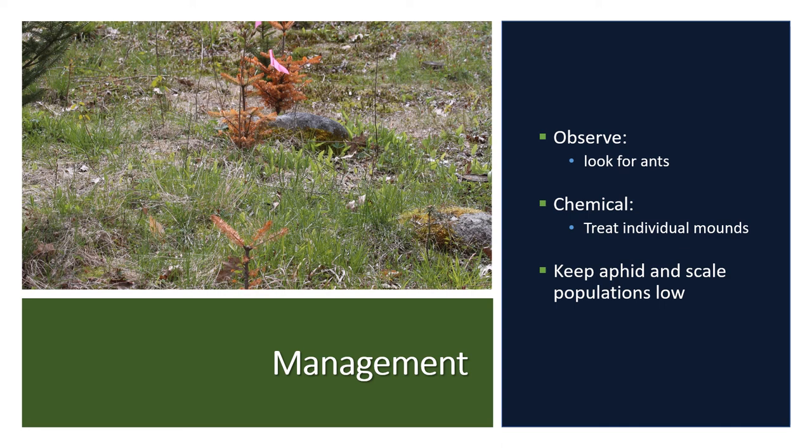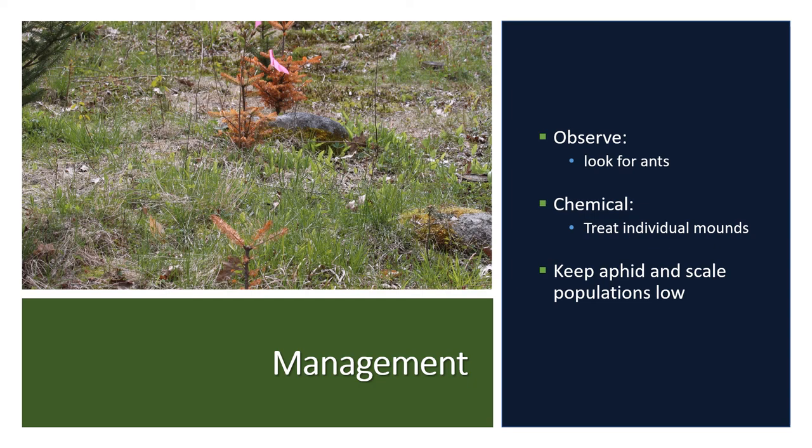Allegheny mound ants kill all vegetation within 20 feet of their mounds, including large trees in the area, so it is important to manage them. If you see evidence of the Allegheny mound ant, treat individual mounds with a registered pesticide between mid-April and October. Another helpful strategy is to keep aphid and scale populations low, as ants benefit from the honeydew produced by these sucking insects. This concludes the insect and mites section, but keep in mind that there are other insects not covered here that you may encounter. Review your study manual for other pests not covered in this section.